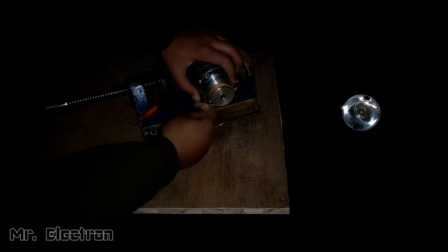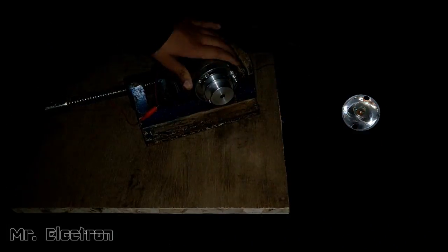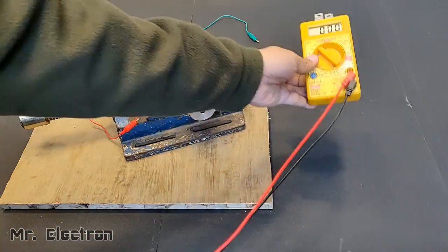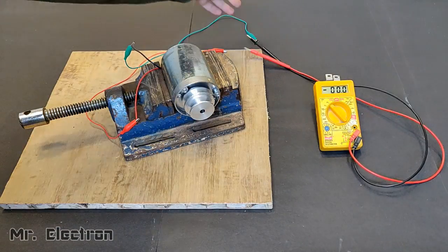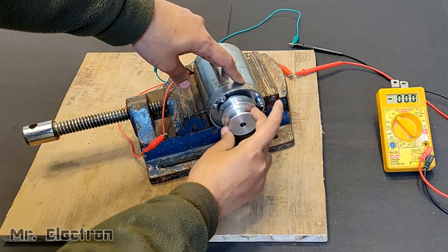Let's turn off the light and try again. You can see it is much brighter now. Now let's test the voltage rating of this generator. I mean, how much volts is it generating under hand rotation and after that rope rotation.